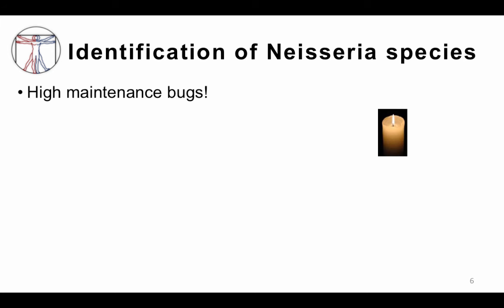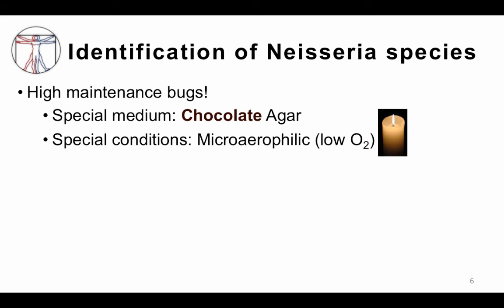Neisseria species are high maintenance bugs. They need special medium — chocolate agar, which is like routine blood agar but heated, so nutrients are broken down and leak out for the organisms to utilize. They also need special conditions, growing in a micro-aerophilic or low oxygen environment, often grown in candle jars. Think of them as liking chocolate and candlelit dinners.